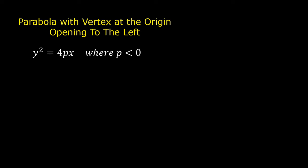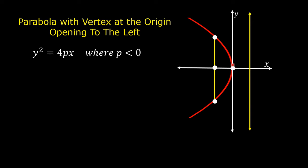The equation of a parabola with vertex at the origin and opening to the left is in the form y squared is equal to 4px, where p is less than 0. In this figure, this is a parabola opening to the left. This is the vertex of the parabola at the origin. The coordinates of the vertex are (0, 0). This is the focus of the parabola with the coordinates (p, 0).